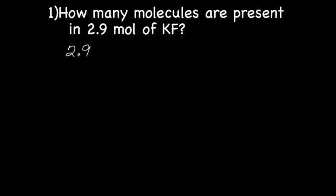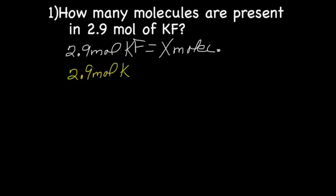So here we go. How many molecules are present in 2.9 mol of potassium fluoride, or KF? So we start by writing this as a math problem. We have 2.9 mol KF. And we're trying to find out the number of molecules. So next, we're going to set up the grid. And in the grid, we're going to put our known, which is 2.9 mol KF over 1.